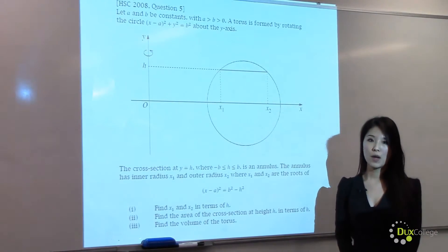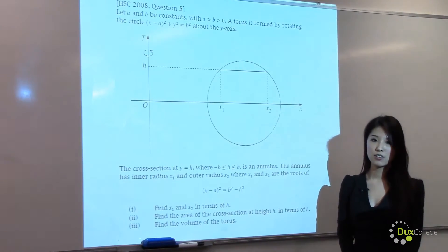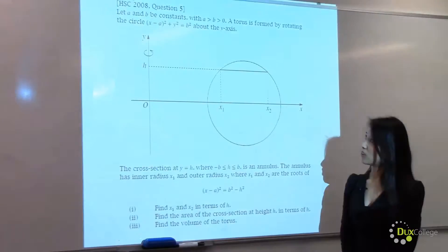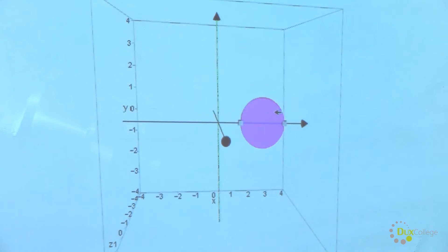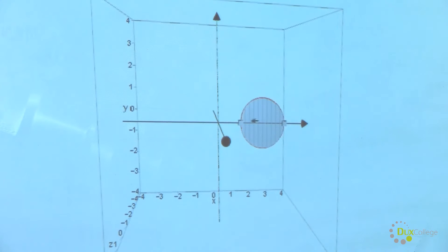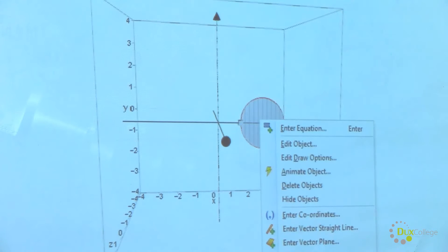I'm going to first show you an animated representation of this torus. Here's an animated representation of the torus that we wanted to find. We have this circle, and the area of the circle is rotated about the y-axis to form the annulus.